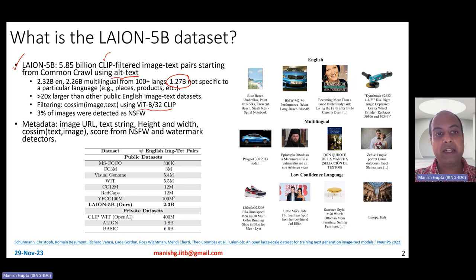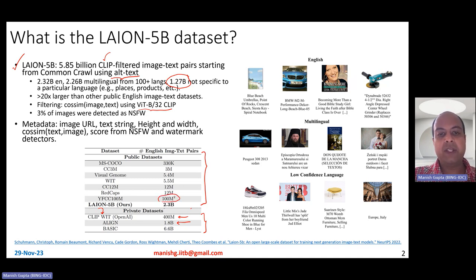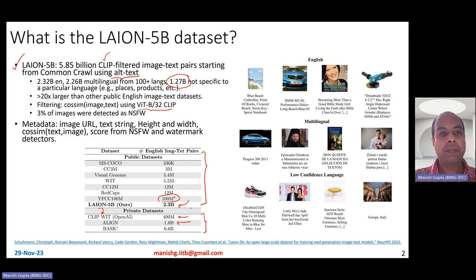This dataset is actually more than 20x larger than any other publicly available image-text dataset. As you can see in this picture, there are several public datasets and private datasets which have been used to train various models. For example, CLIP's web image-text (WIT) dataset by OpenAI is a 400 million dataset. The Align model uses about 1.8 billion samples, but it's a private dataset. The largest publicly available dataset was around 100 million image-text pairs, so LAION 5 billion is more than 20x larger. Also, 3% of these images were detected as not safe for work, so it's not a completely filtered and clean dataset.